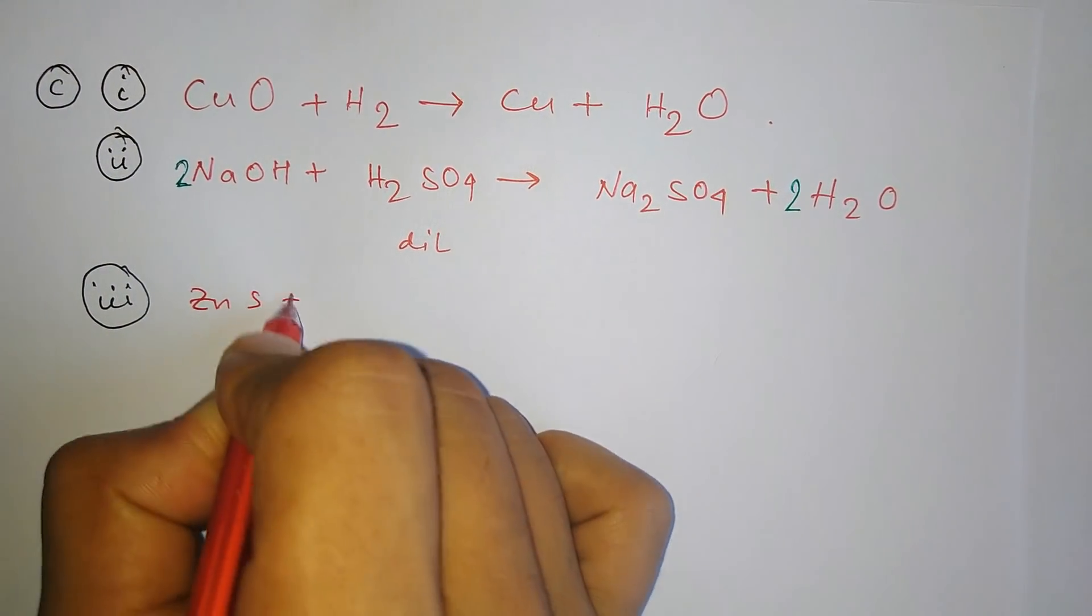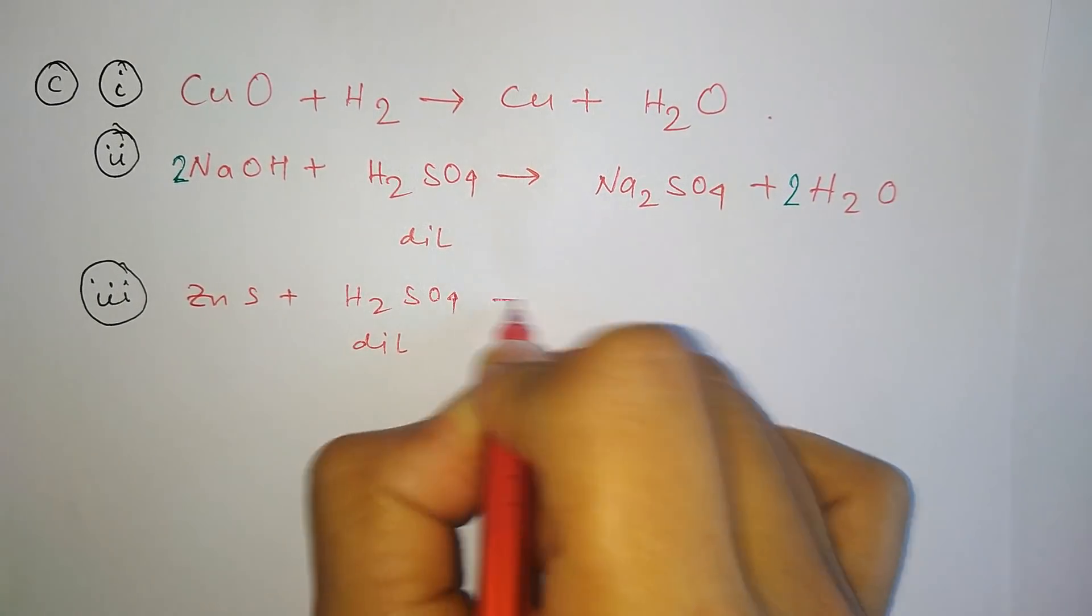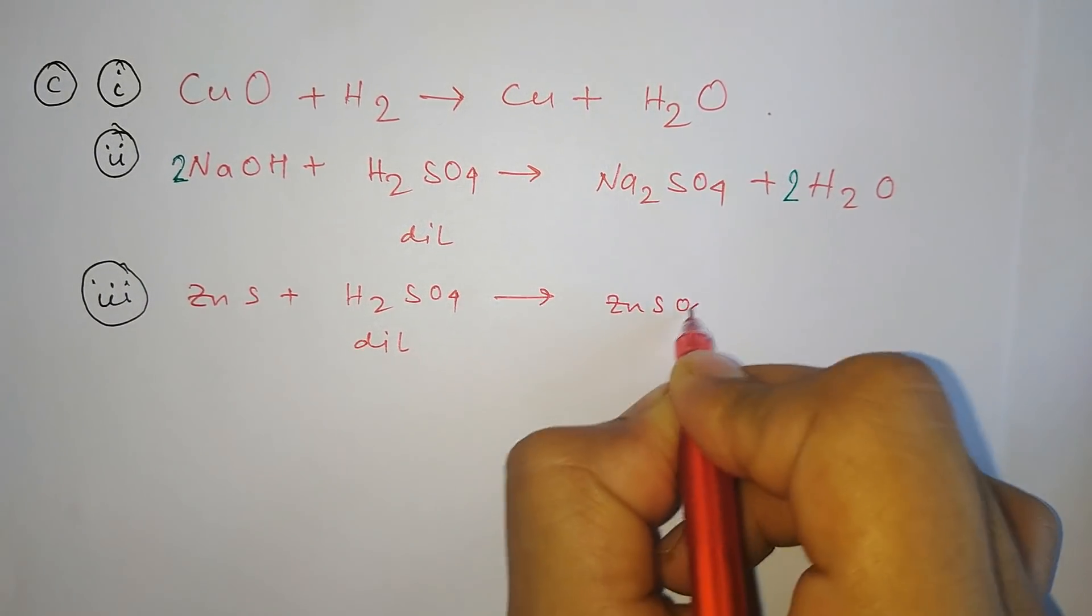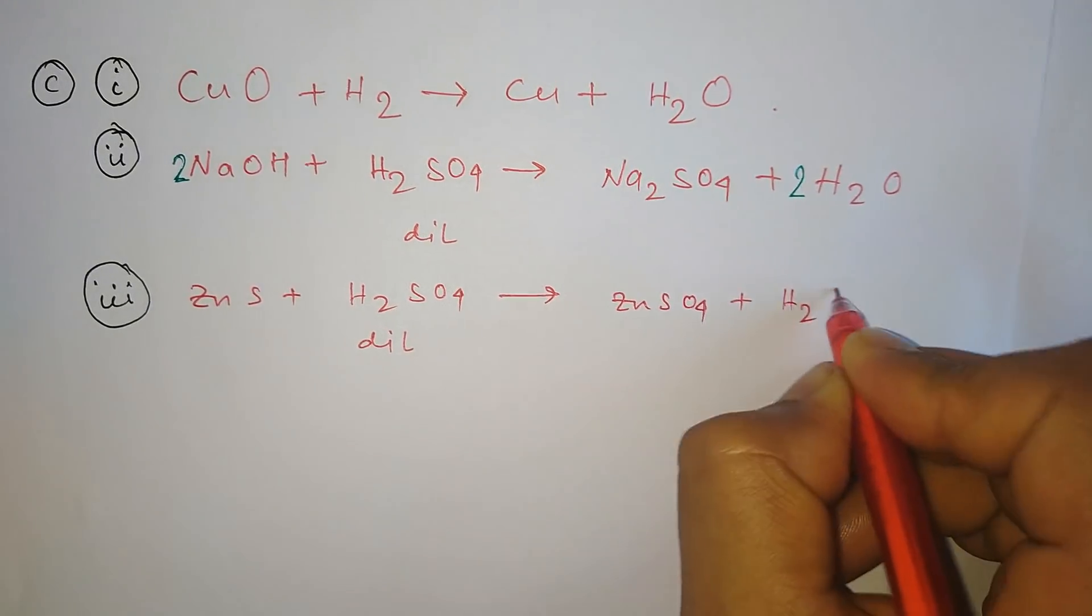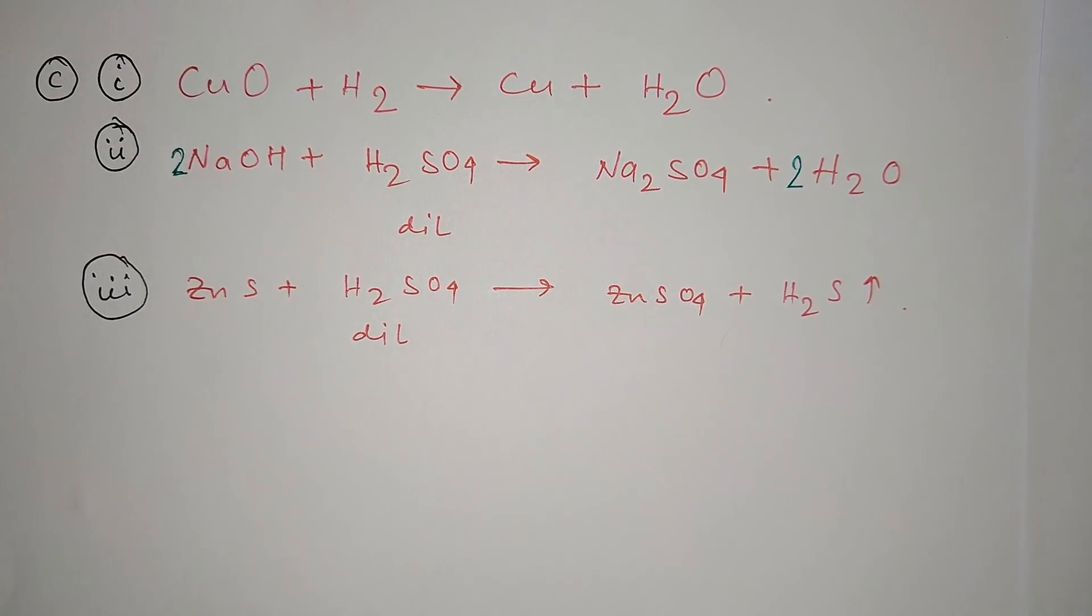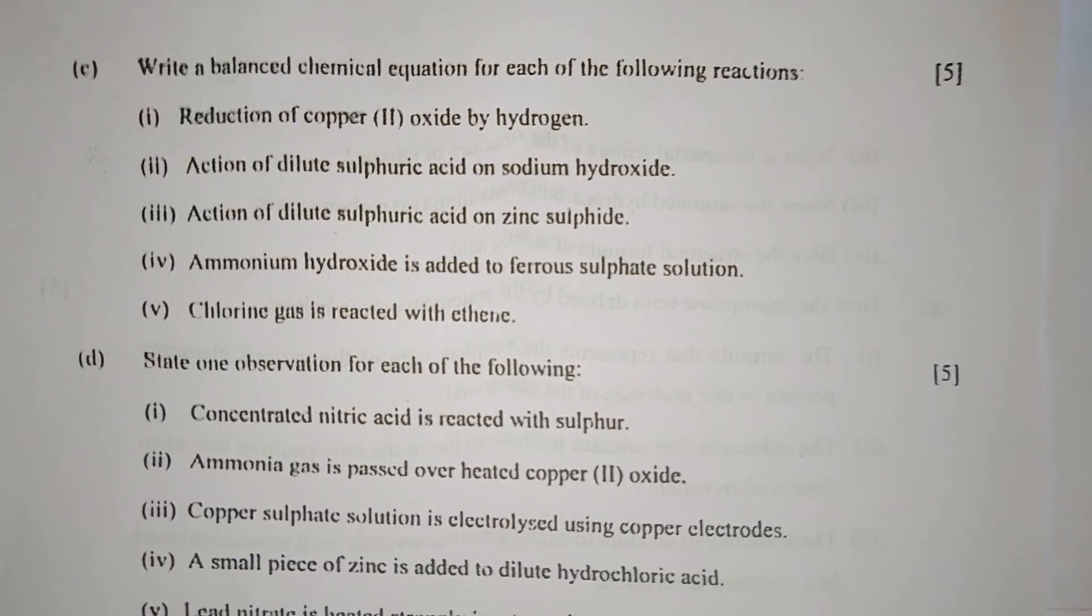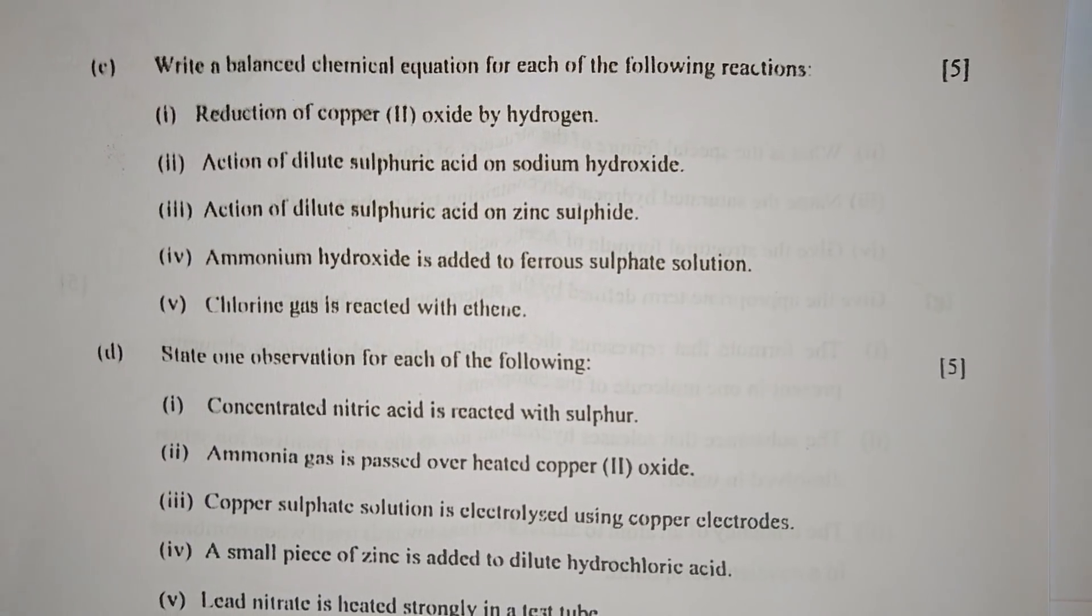Zinc sulfide reacts with dilute sulfuric acid to give zinc sulfate and produce hydrogen sulfide gas as other metallic sulfides do while reacting with dilute acids.